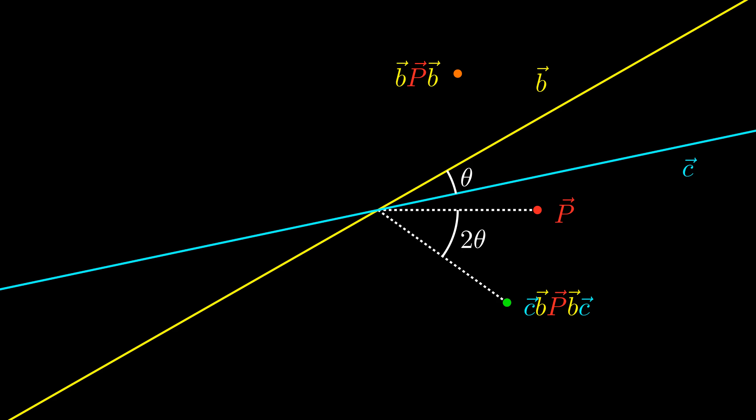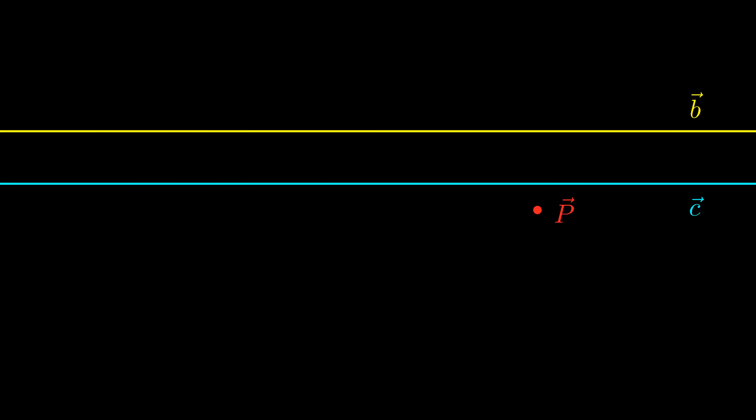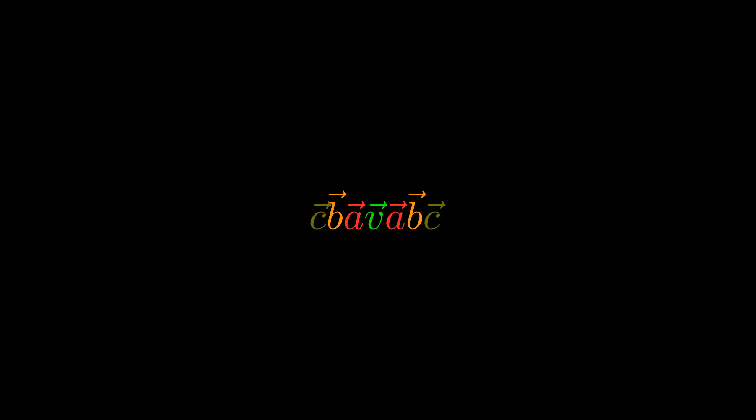Now what if we were to try to rotate with two parallel lines? After reflecting twice, the point has simply moved in a direction perpendicular to the lines — a translation. You can work out that this distance is twice the distance between B and C. So in PGA, we can describe translations in the same way as rotations. Because we can keep adding more reflections, we can compose an arbitrary number of reflections, rotations, and translations together. In fact, with enough reflections it turns out we can describe any rigid transformation in the plane.